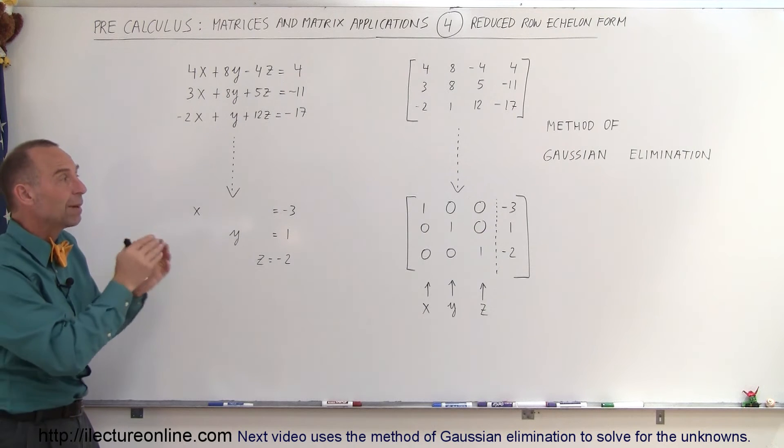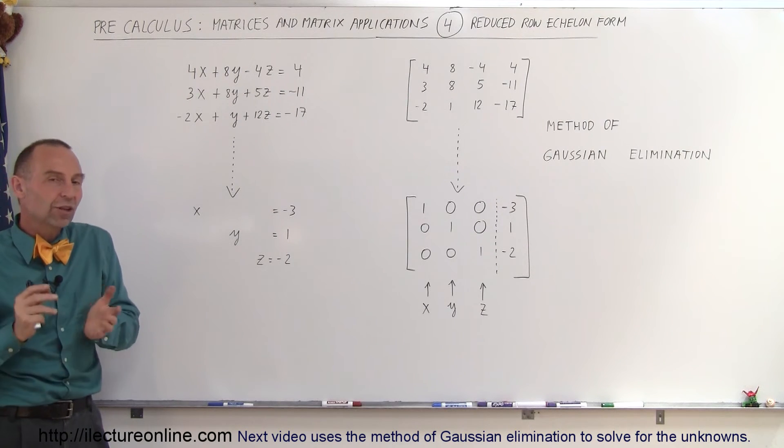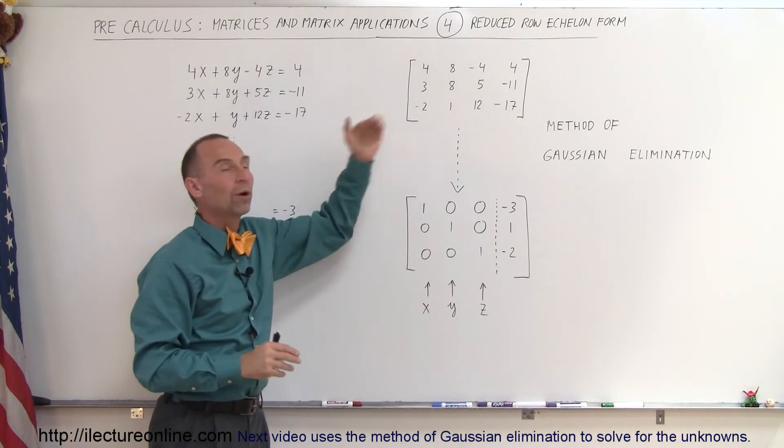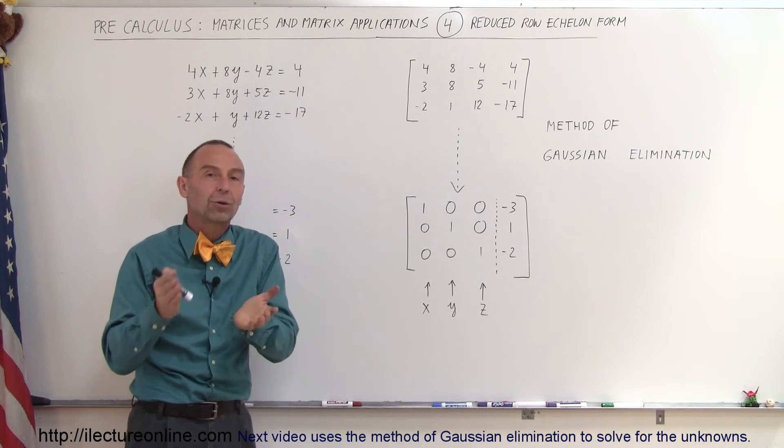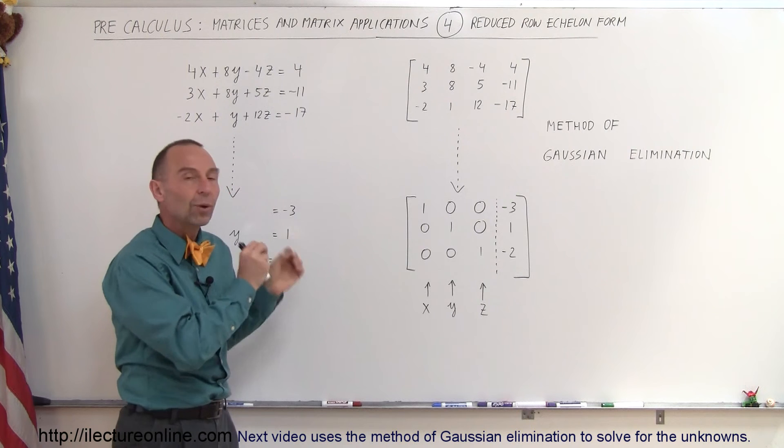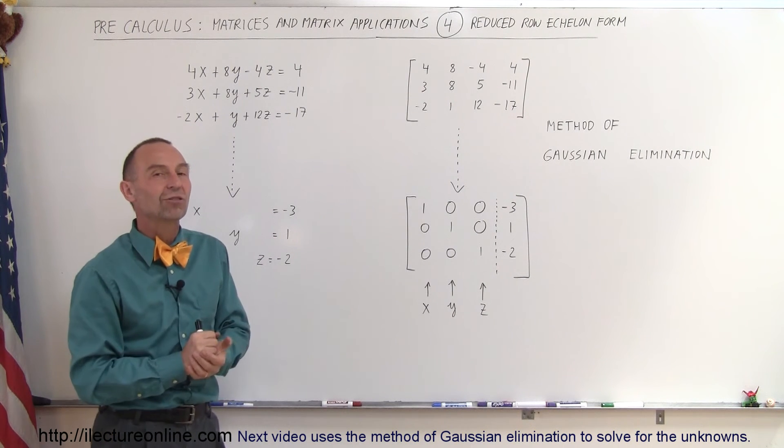And that can be done using the method of Gaussian elimination. So now you know what we mean by the reduced row echelon form and why we would use it. We know what we mean by the row echelon form and so either one of those techniques allows us to solve the system of linear equations.